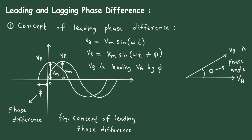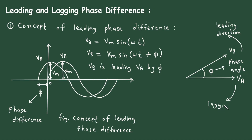This direction is called the leading direction, and the opposite direction is called the lagging direction. This is the phasor diagram for leading phase difference.